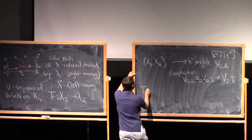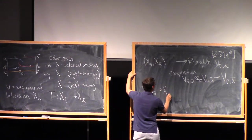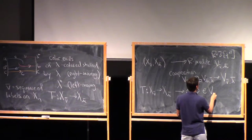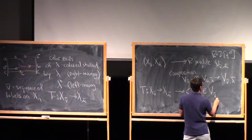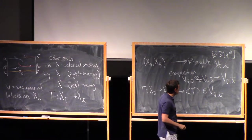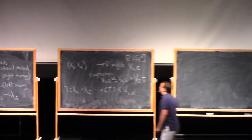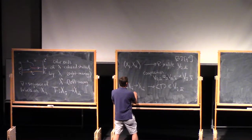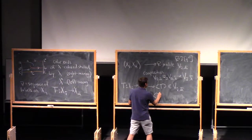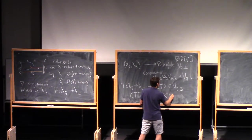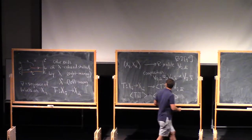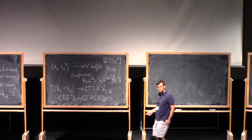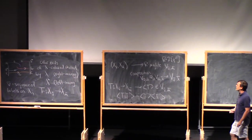I have a composition map that goes from v nu bar mu bar tensor over r v mu bar lambda bar to v nu bar lambda bar. And now, if I have a tangle T from x nu bar to x mu bar, I get a bracket of T in v nu bar mu bar. And this behaves well with respect to composition in the same way that we saw with the Jones polynomial. So the bracket of T T prime is the bracket of T times the bracket of T prime.